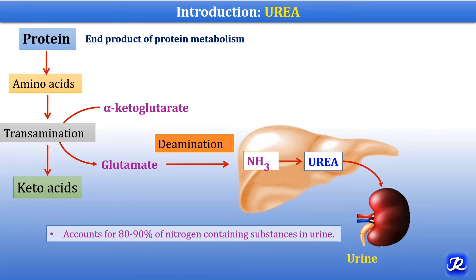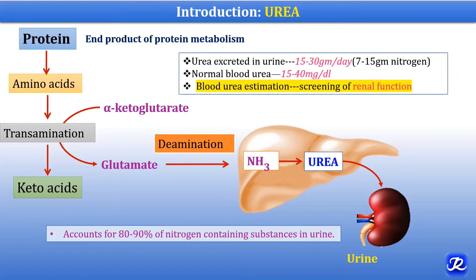Urea accounts for 80 to 90 percent of nitrogen-containing substances in the urine, and daily 15 to 30 grams of urea is excreted. Normal blood urea concentration is 15 to 40 milligrams per deciliter, and blood urea estimation is done for screening of renal functions.